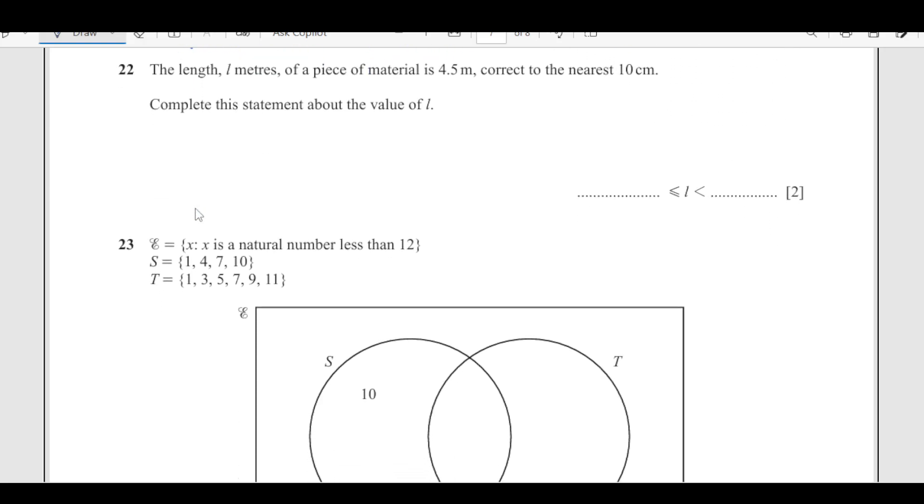Number 22: The length l meters of a piece of material is 4.5 meters, correct to the nearest 10 centimeters. We're looking for the lower and upper bound. 10 centimeters equals 0.1 meters, so half of that is 0.05. We add 0.05 and subtract 0.05. This gives us an upper bound of 4.55 meters and a lower bound of 4.45 meters.